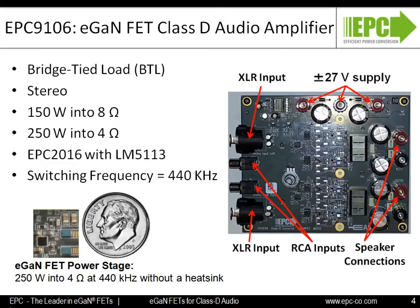To demonstrate, we have the EPC-9106 Demonstration Board — a reference design for a 150-watt 8-ohm Class-D audio amplifier. The demonstration board uses a bridge-tied load design composed of four ground-referenced half-bridge output stages. This architecture and topology allows scalability and expandability. The EPC-9106 features the 100-volt EPC-2016 eGANFET switching at 440 kHz, enabling a very small efficient power stage, as you can see on the bottom left of this slide. Lower on-resistance and gate charge offer lower losses, allowing for total elimination of the heat sink in many cases. This system is capable of 250 watts into a 4-ohm load at 440 kHz without a heat sink.